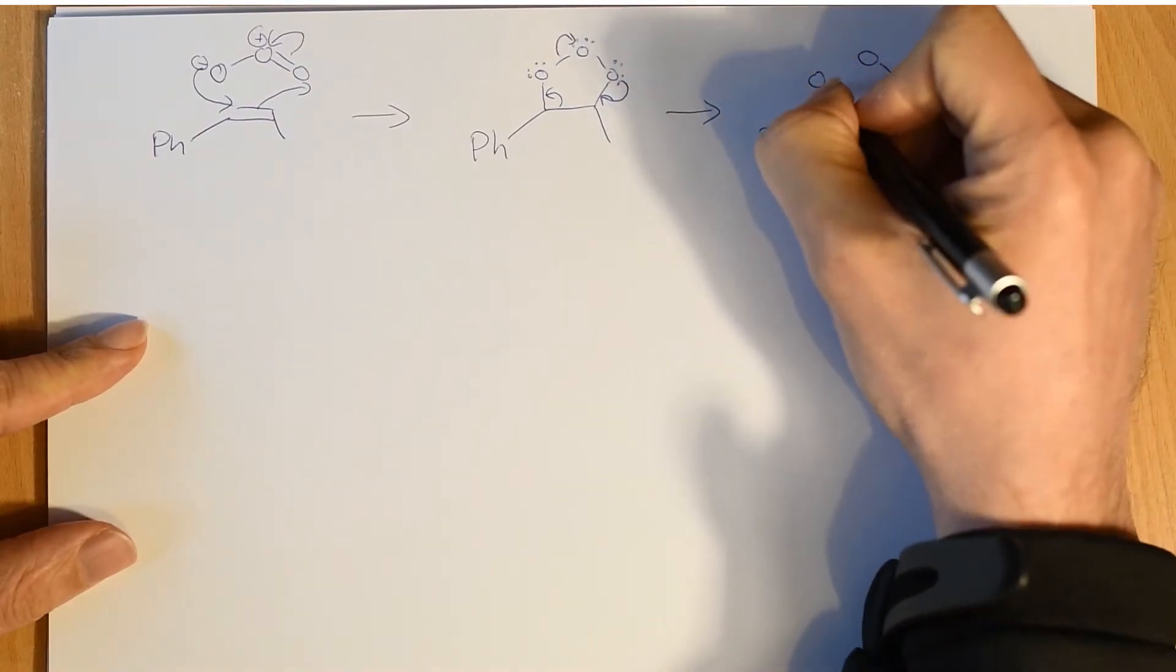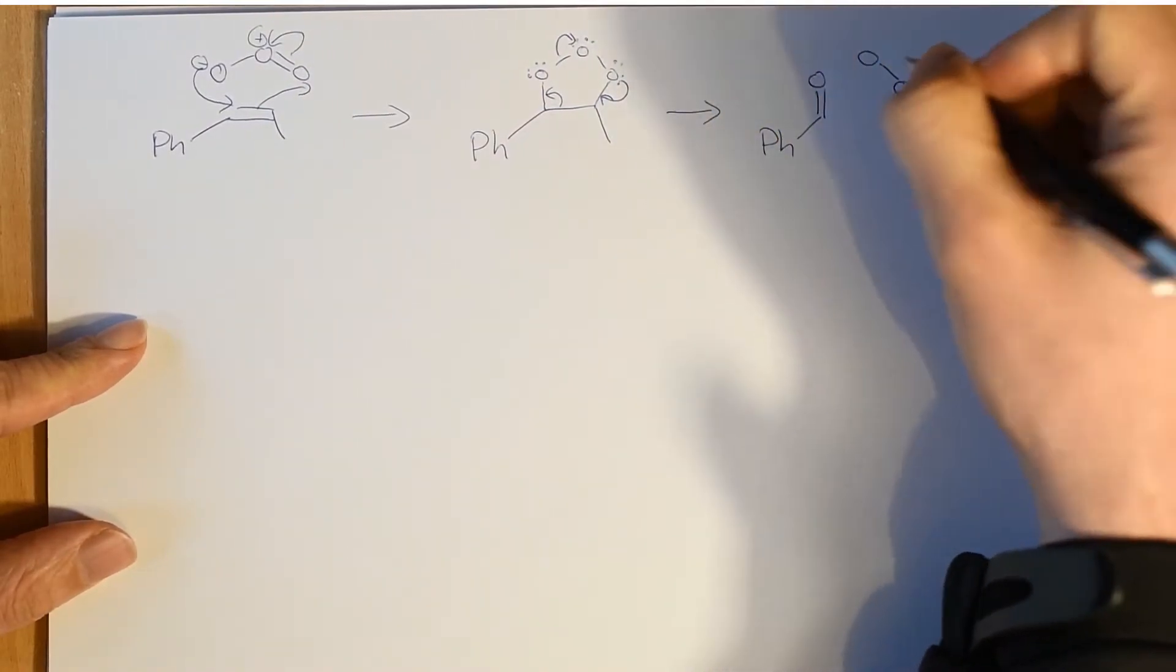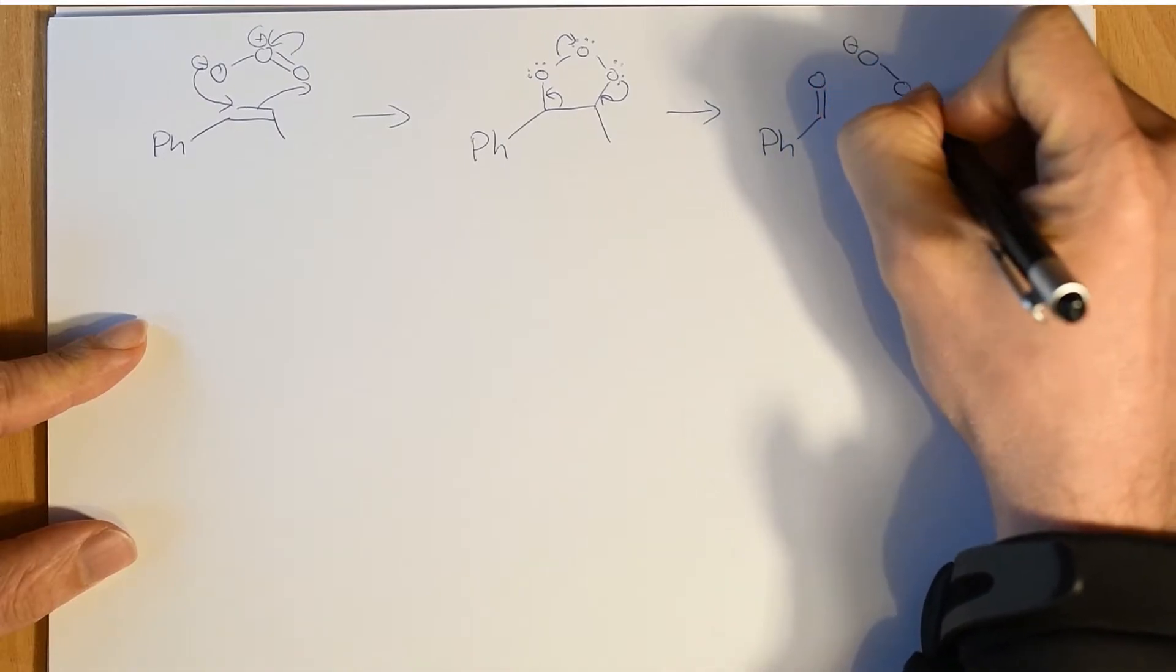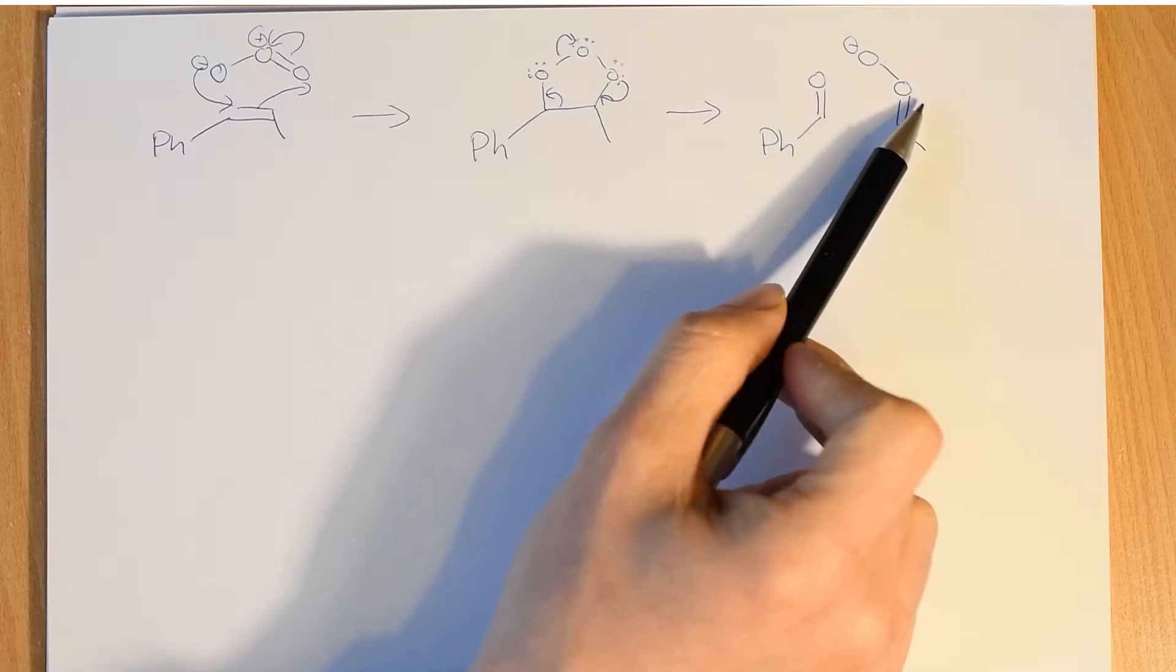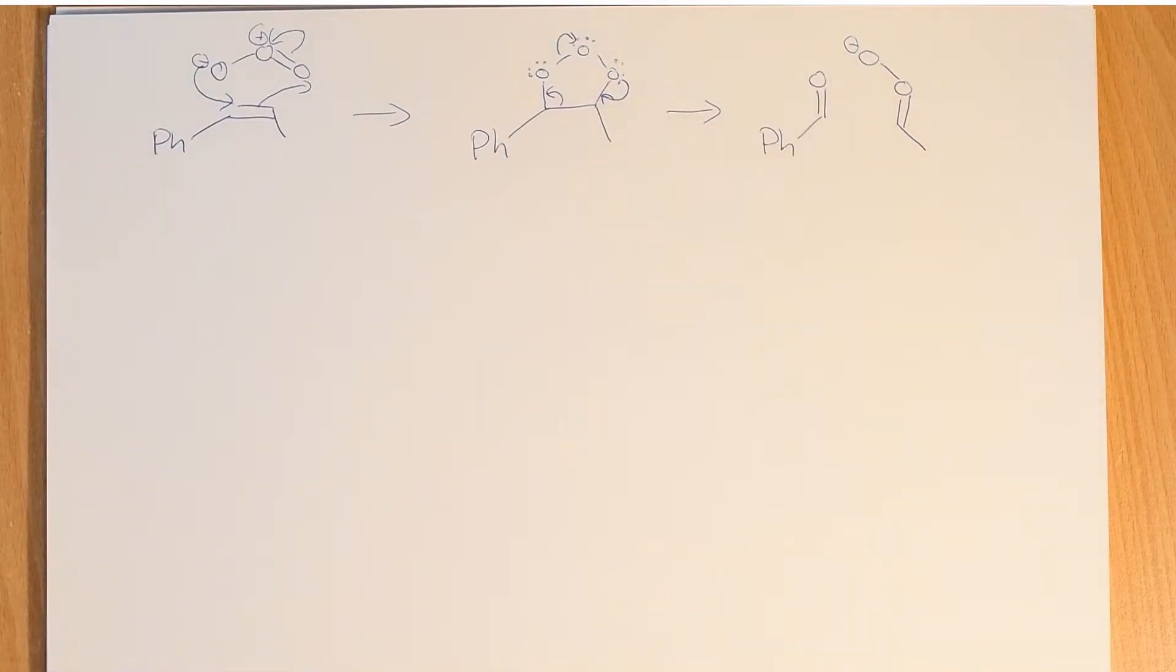And we can see what we're going to make is something rather unusual looking. So I took that pair of electrons there, and we've made an aldehyde on one side. That's normal looking. But we've made a peroxy aldehyde, or the oxide of an aldehyde here, because it's got an extra oxygen on it.